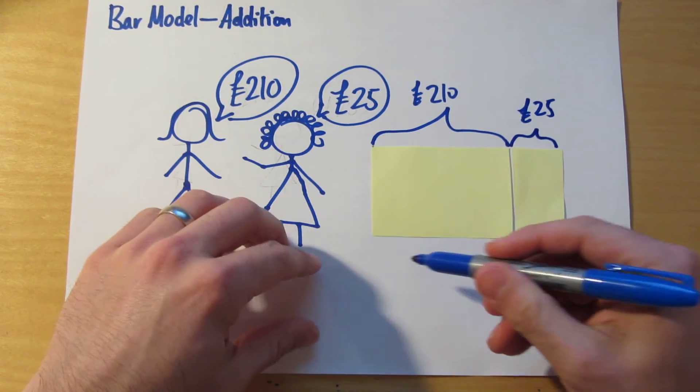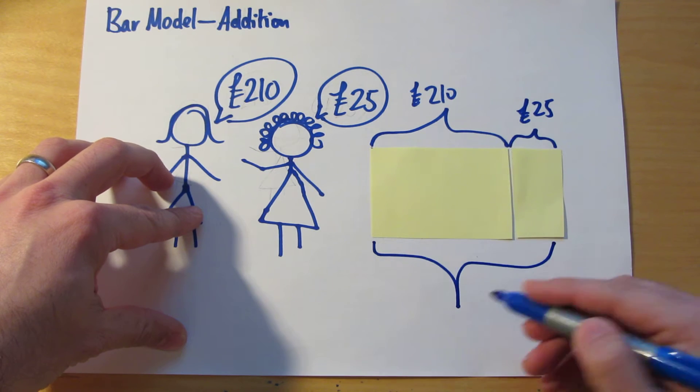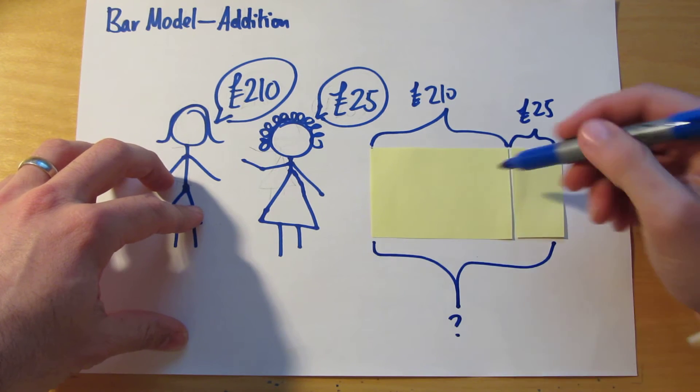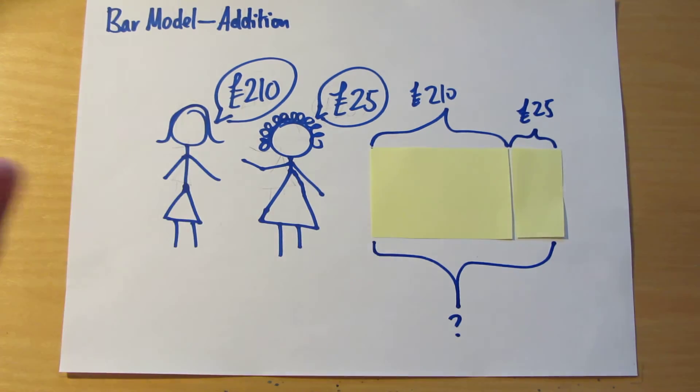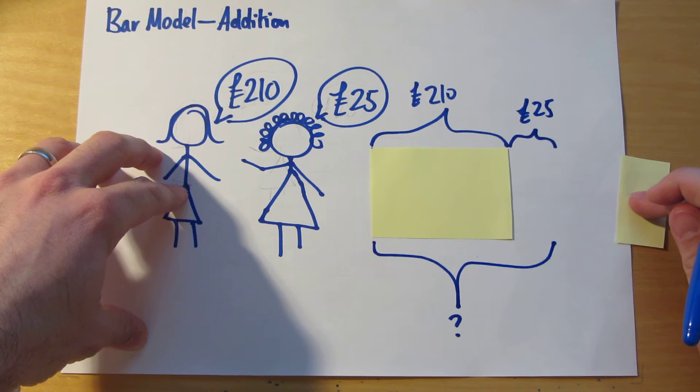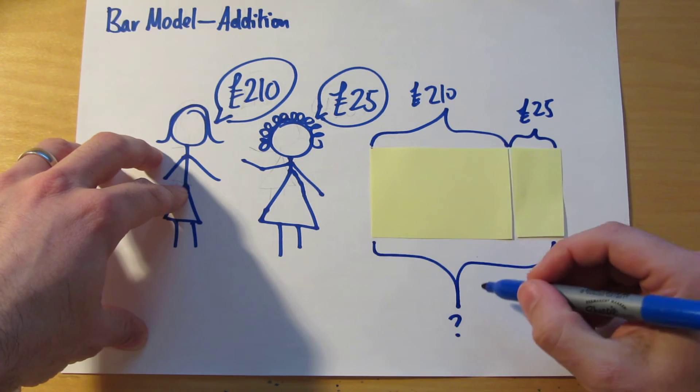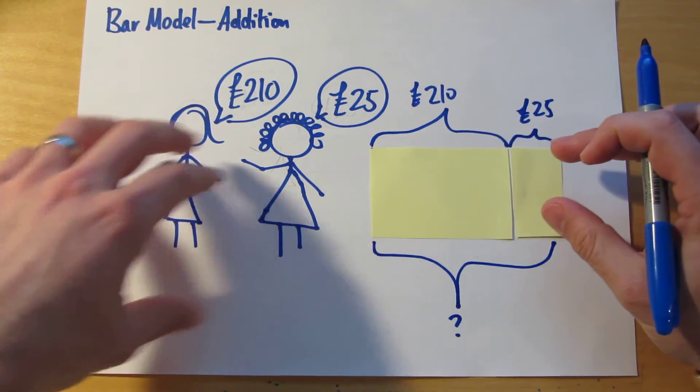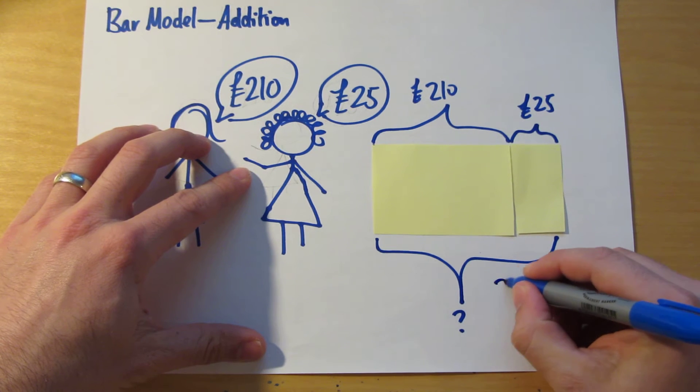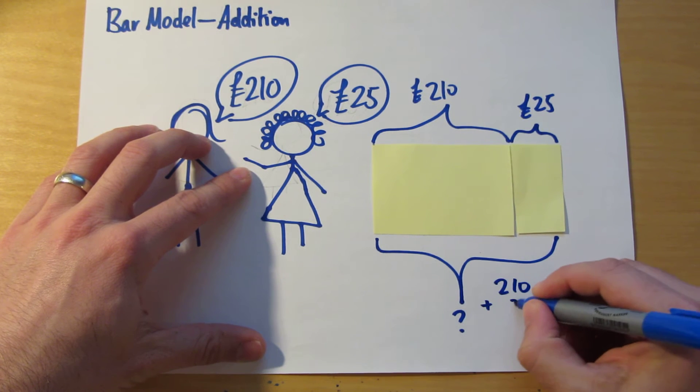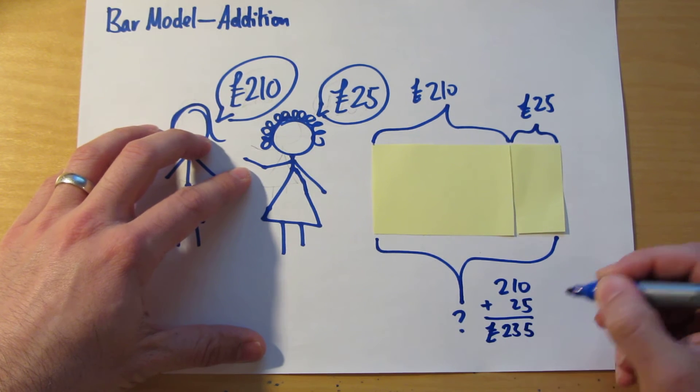And the question is, how much has this girl got altogether? Can you see how this bar model, this rectangle, helps us to see that this is an addition problem? If that's £210 to start with, and then her gran gives her £25, if we're asked to find out how much it is altogether, we have an addition problem. So then we would work that out by doing £210 plus £25, which is £235.